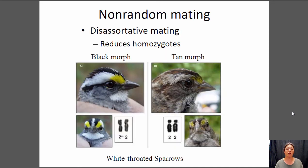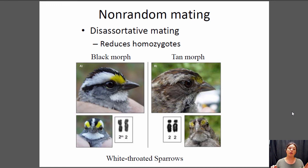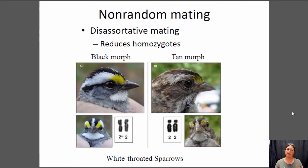There's also disassortative mating, which tends to reduce homozygotes and increase heterozygotes. This little bird is a white-throated sparrow. White-throated sparrows have two morphs — and this is not a male and a female; both males and females can be either black or tan. Tan males only mate with black females, and black males only mate with tan females, so they always mate with the one that looks different from them. This has to do with behavioral differences — tan individuals tend to be better parents, while black individuals tend to be more aggressive and better at defending territory, so pairing them together creates a successful coupling. Those are our mechanisms of evolution — check out the selection lecture coming up next.